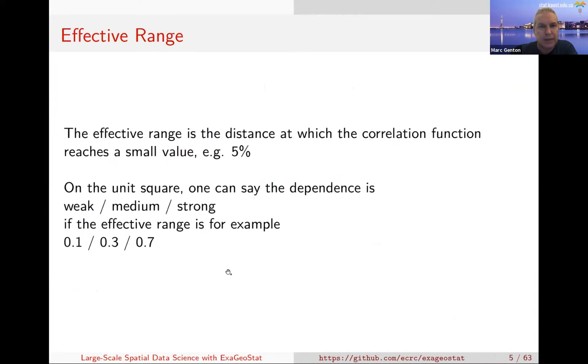We're interested in estimating these four parameters from data. It's useful to define what is called an effective range, which tells you at which distance the correlation function reaches a small value, for example 5%. If you have spatial data on a unit square, you could say the dependence is weak, medium, or strong if this effective range is 0.1, 0.3, or 0.7.